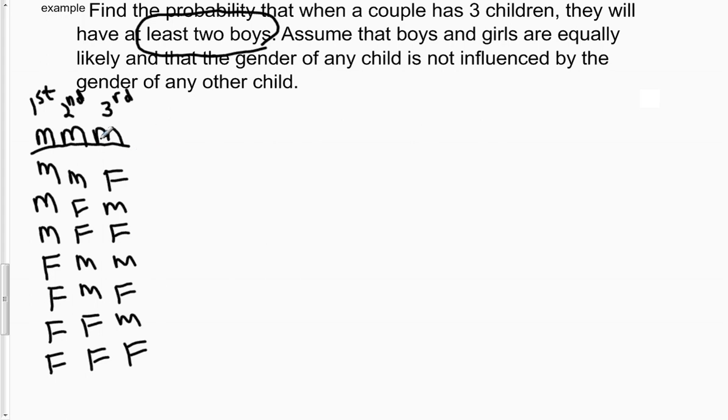In the first row, I see there are three boys. So the first row fits the criteria of having at least two boys. The second row has two boys also, so that fits the criteria for at least two boys. The third row, two boys also, so that fits the criteria.